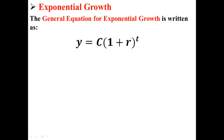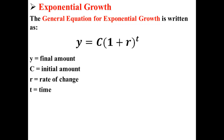The general equation for exponential growth is written as y equals c times 1 plus r to the power of t. Here, y is our final amount, c is our initial amount, r is the rate of change, and t is the time.